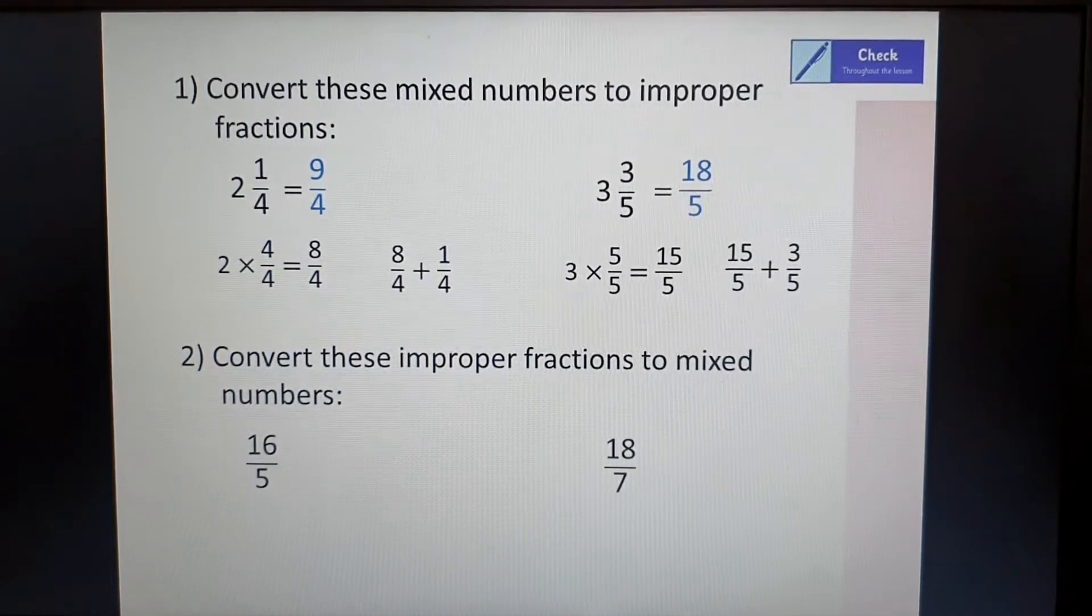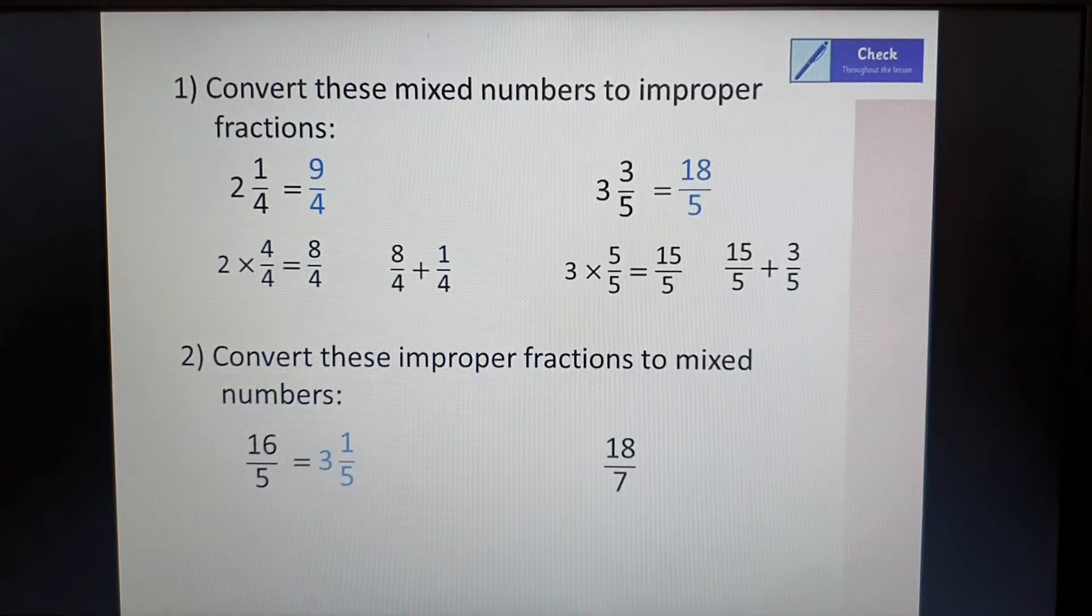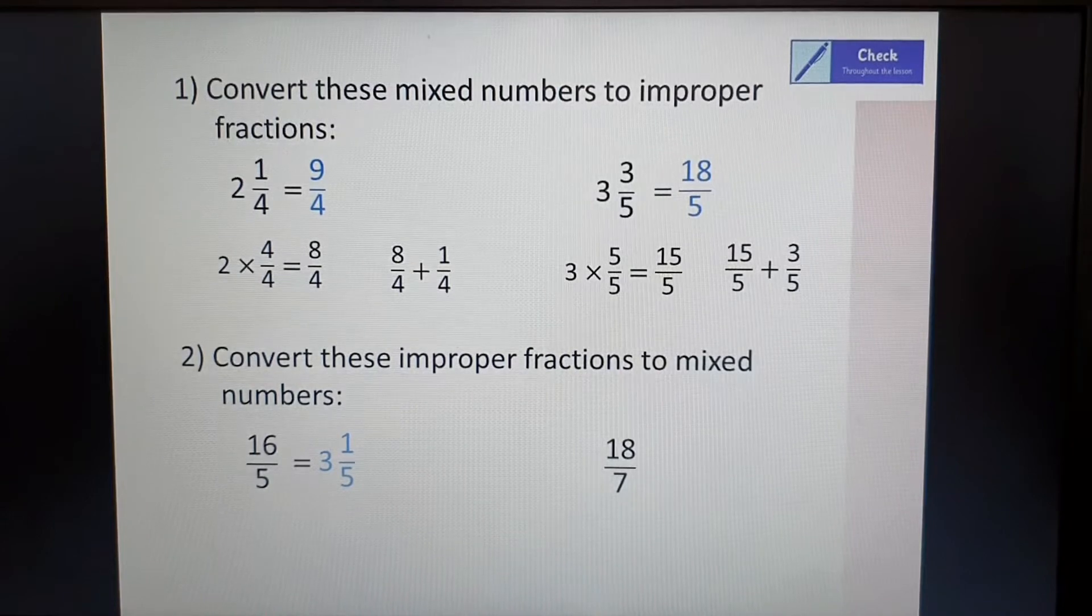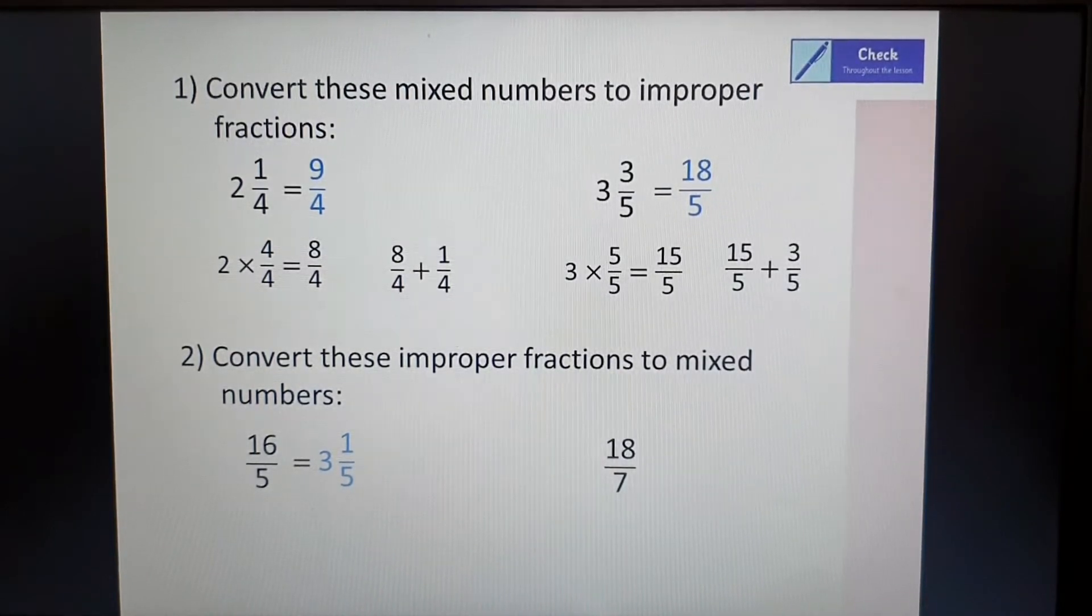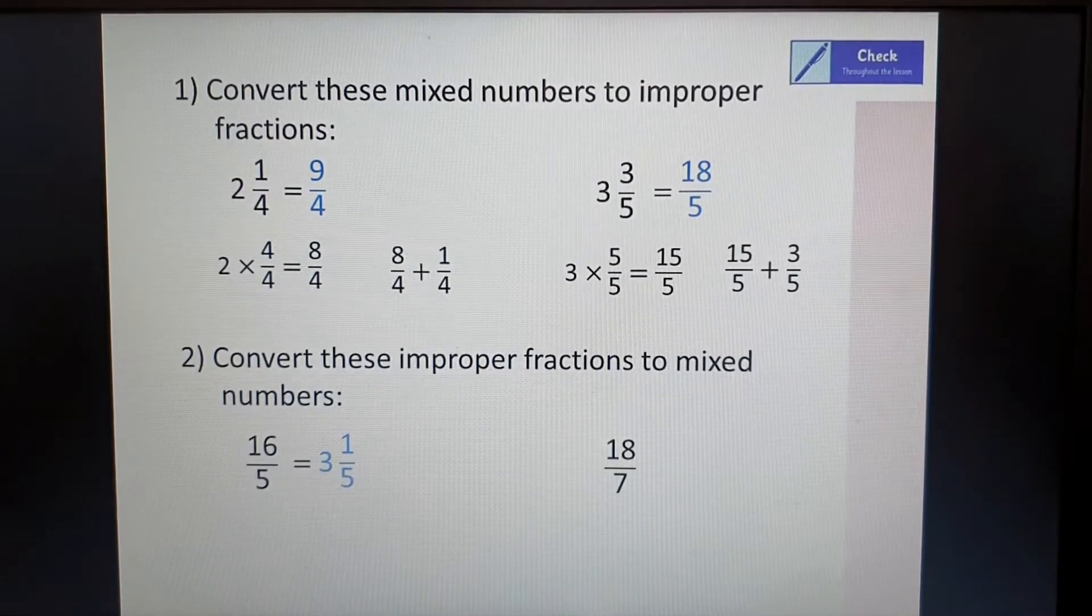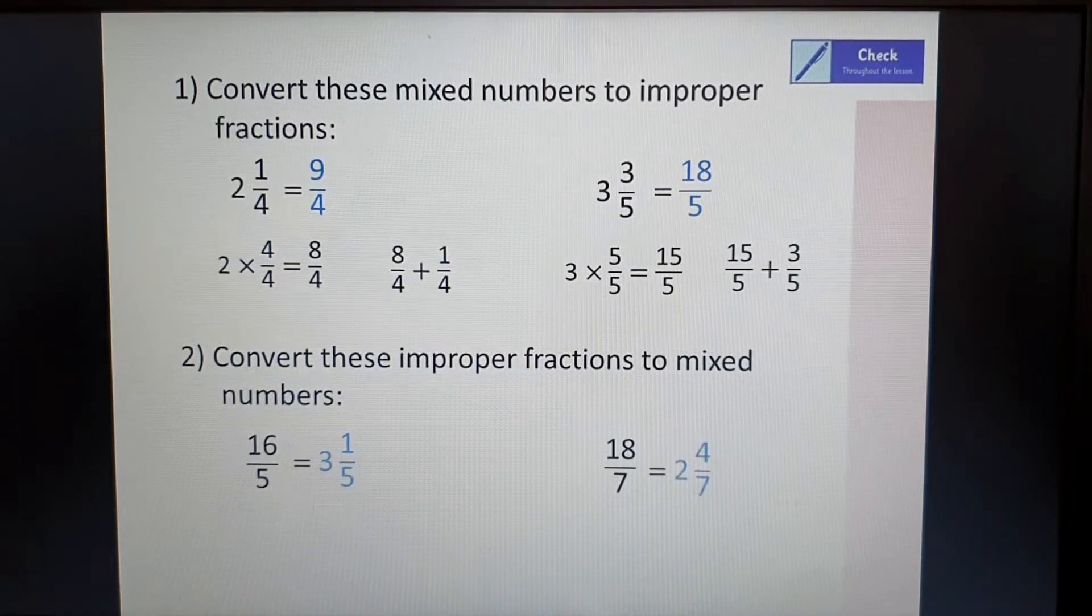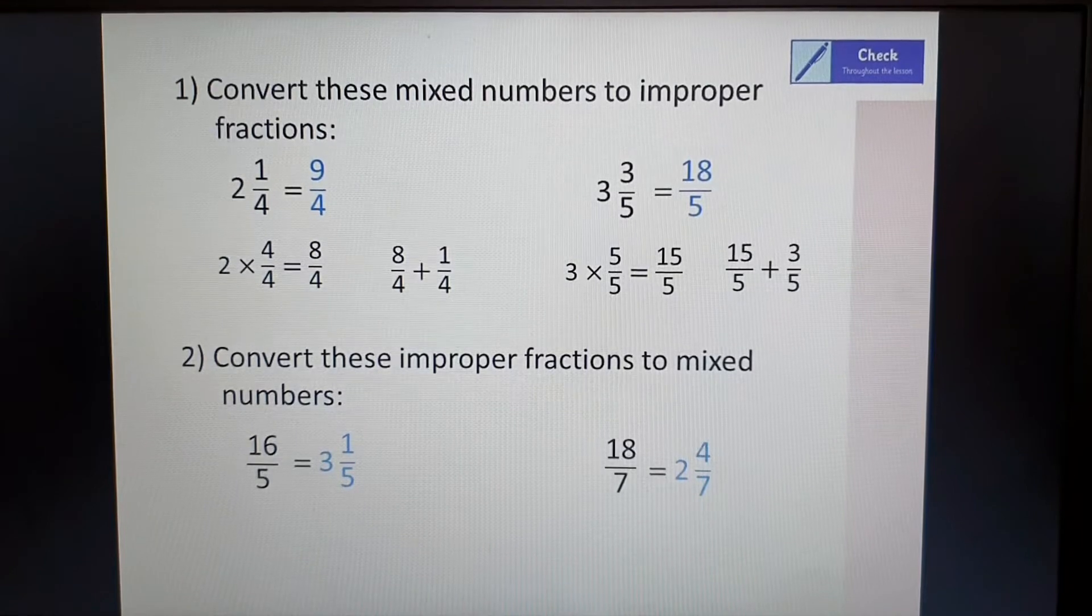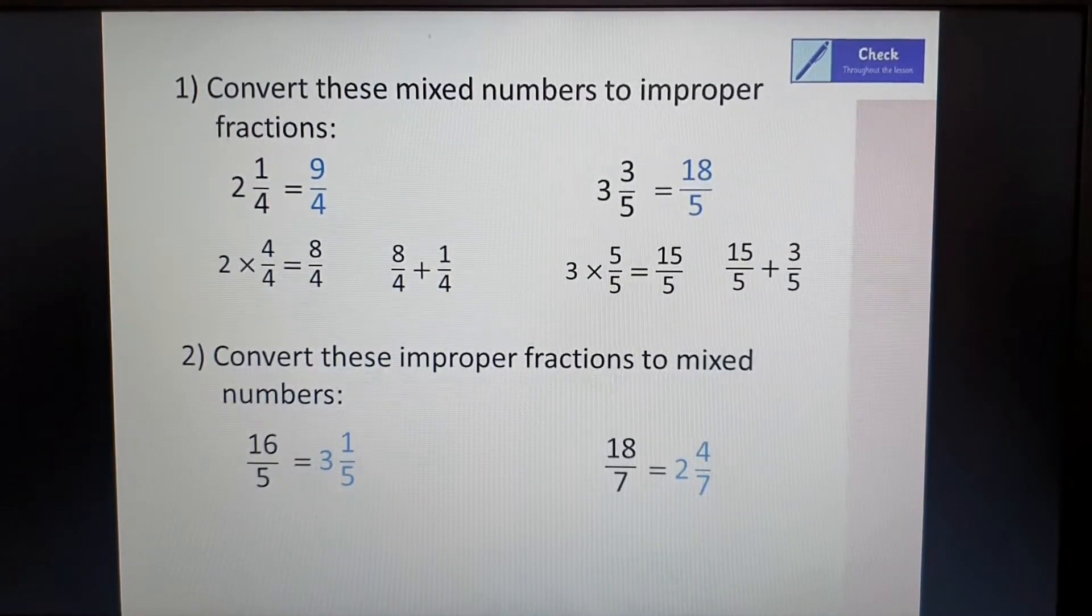Number two, these are going the other way around. So there are three wholes within 16 fifths and there's one fifth left over. So you count up in fives: five, ten, fifteen. You'd have got three lots of five in 16 and one left over. The next one, if we count up in sevens then we'd have had two sevens which would get to 14 and then four sevenths left over. We're going to look at this more today and tomorrow so don't worry if you weren't sure.